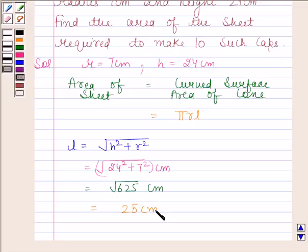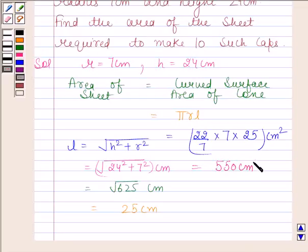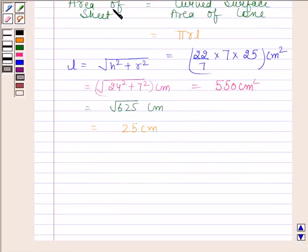Now substitute the value of π, r, and l. π is equal to 22/7, r is equal to 7, l is equal to 25 cm². And this is equal to 550 cm². So area of one sheet is 550 cm².